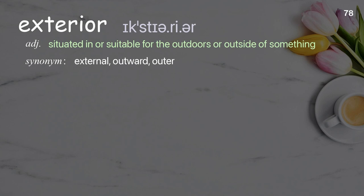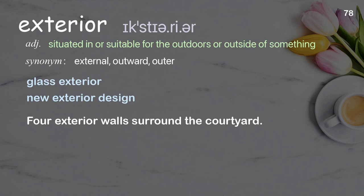Exterior: situated in or suitable for the outdoors or outside of something. Examples: glass exterior, new exterior design. Four exterior walls surround the courtyard.